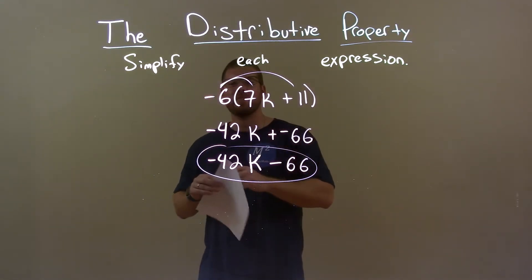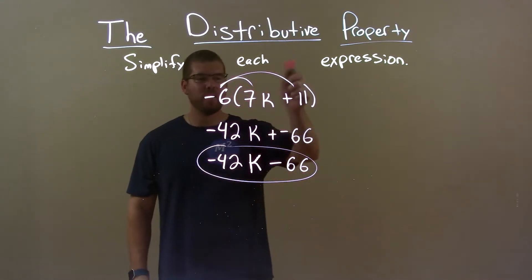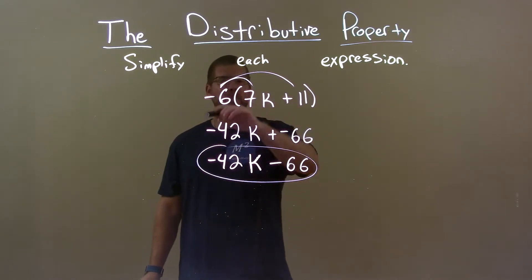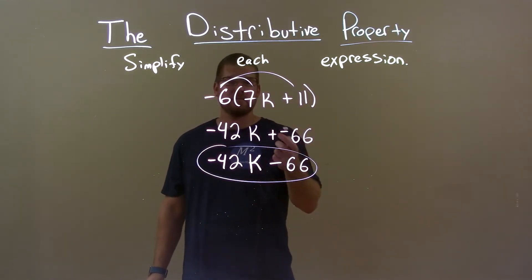So quick recap, we're given negative 6 times 7k plus 11. I distribute the negative 6 across and simplify and got my final answer, negative 42k minus 66.